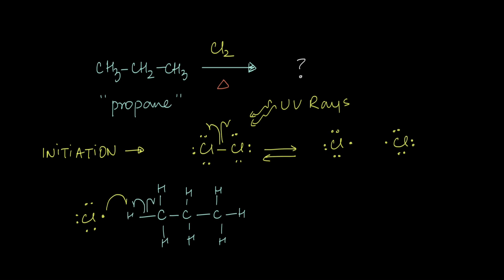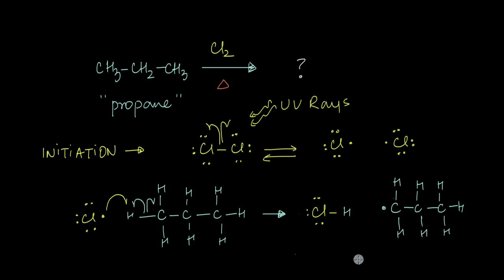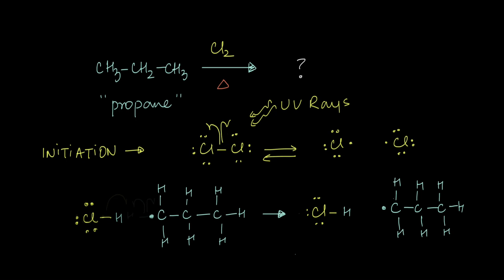It can in fact abstract this hydrogen from a propane molecule. If this happens, one of the electrons in the C–H bond goes with hydrogen so that both electrons combine to form a chlorine–hydrogen bond, while the other electron is left on the carbon atom. So whenever a chlorine radical abstracts a hydrogen from propane, this leads to the formation of a new carbon radical.